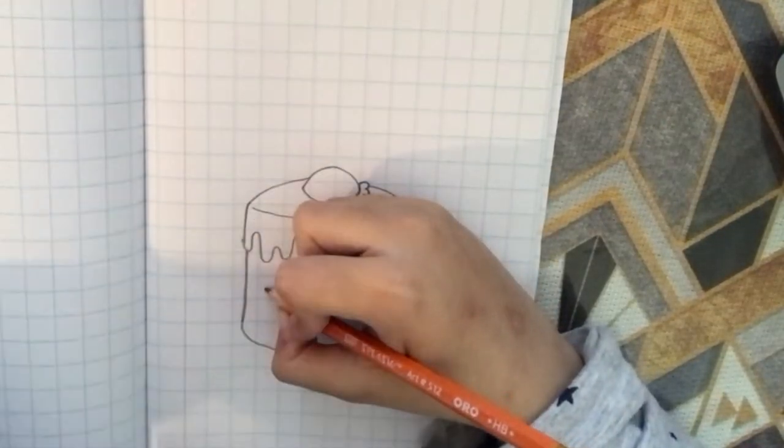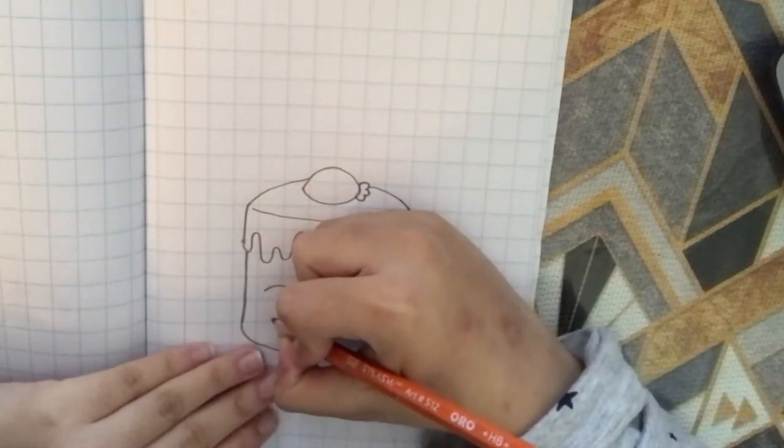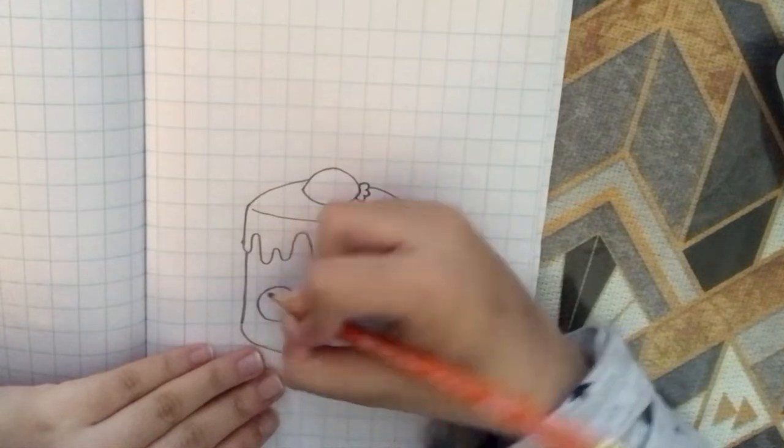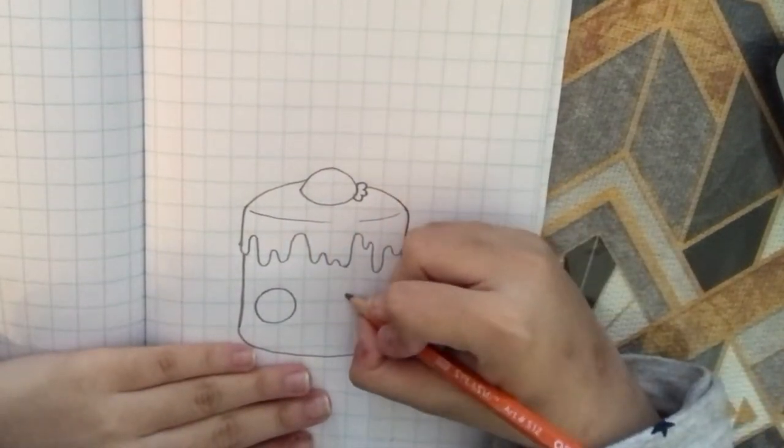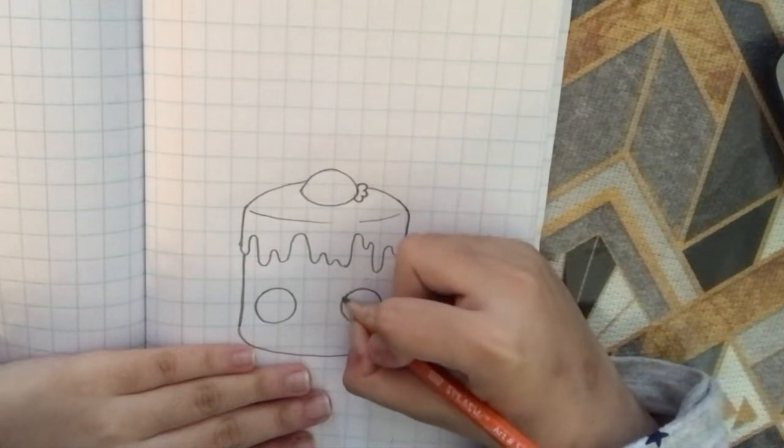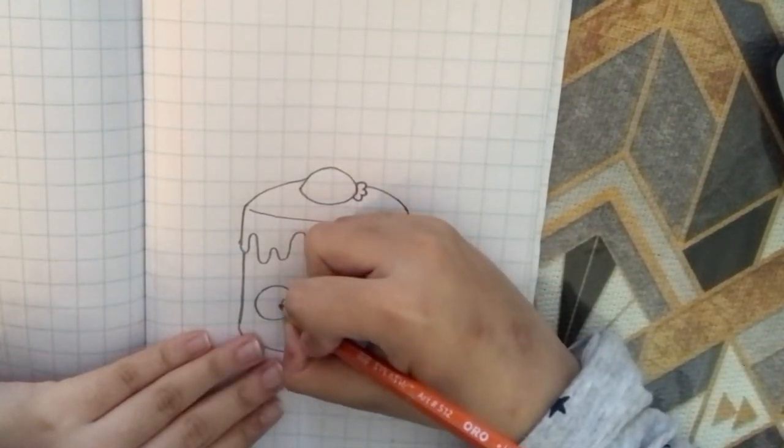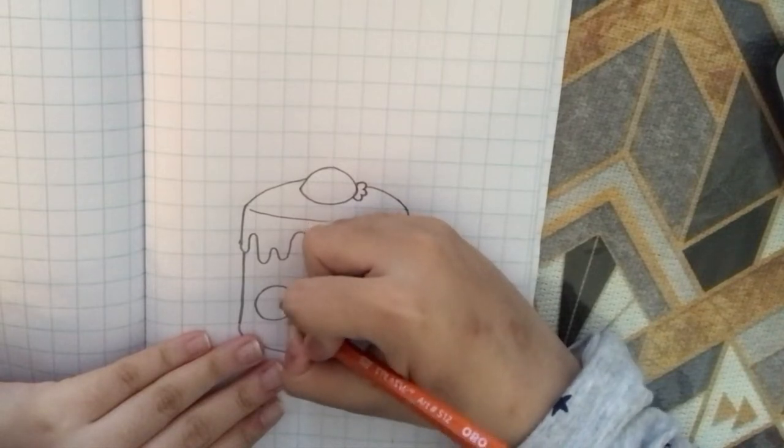Now here we're going to bring this angel food cake to life, so we're going to draw some eyes. Draw a circle right here and another one over there. We want to make these exactly the same height. Now we're going to join the eyes with a bow right here.